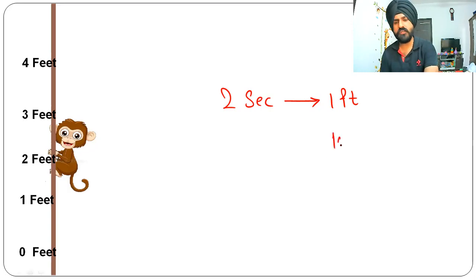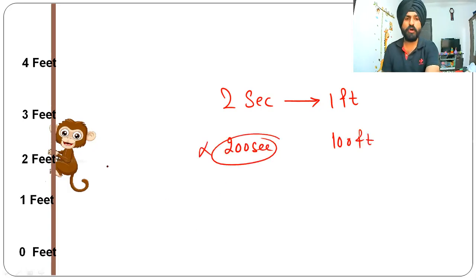Many people do the calculation like for one foot it's two seconds, so for 100 feet it has to be 200 seconds, which is wrong. Why is it not? Because the jump of the monkey is of three feet.